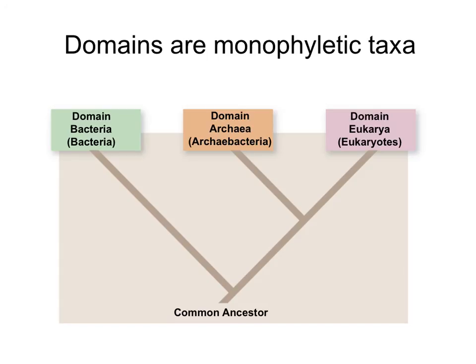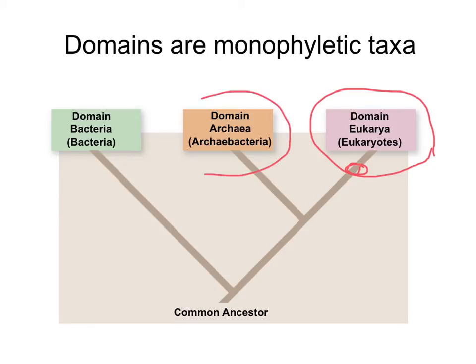All living organisms have been classified into three main domains, and these domains are monophyletic. For example, we belong to the domain Eukarya for eukaryotes, and all eukaryotes share one ancestor that was a eukaryote. The same applies to each of the three domains — within each domain, organisms share a single common ancestor, making each domain a monophyletic group.